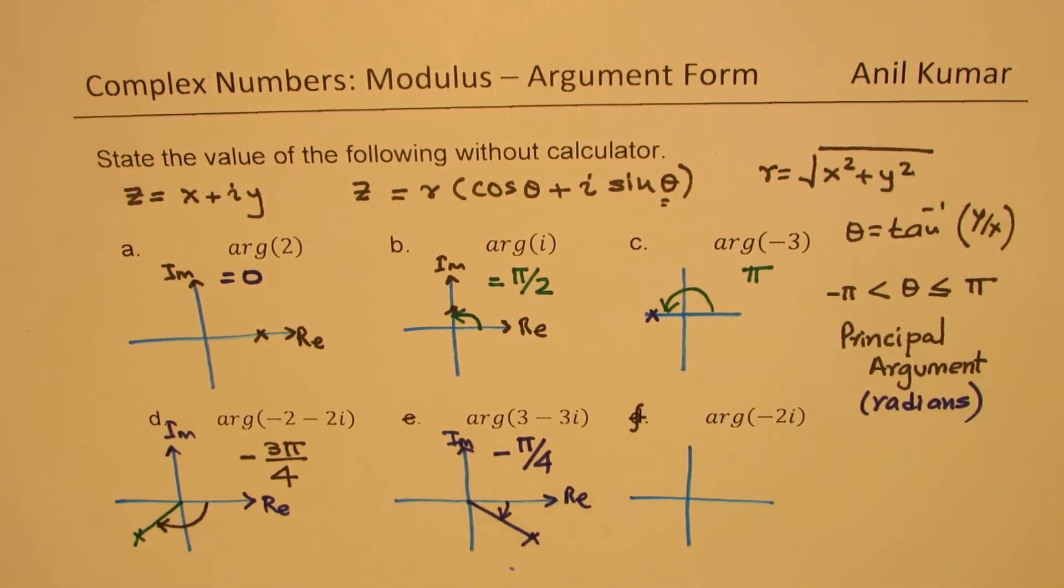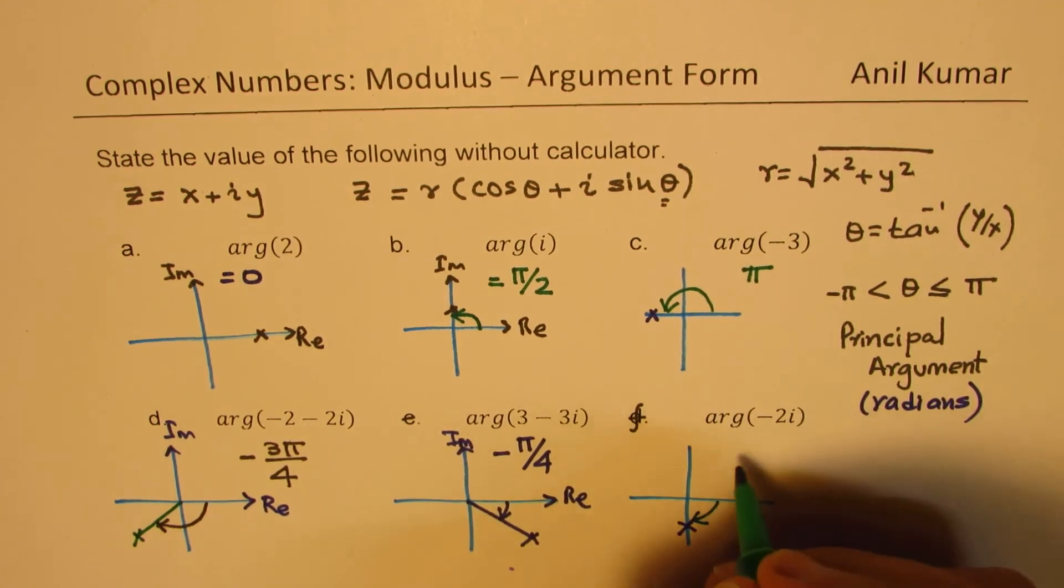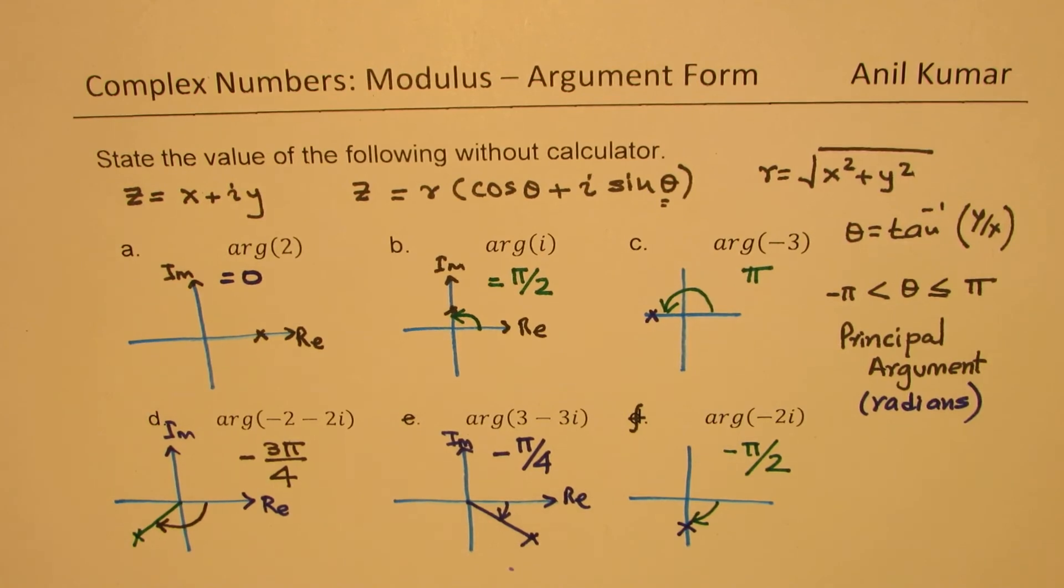The last one here is minus 2i. Minus 2i is a point right there. And so the argument will be minus pi by 2. So that is how we could actually answer these questions.